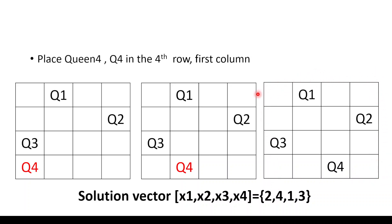This is one solution to the 4 queens problem — you can check for other solutions. The solution vector is (x1, x2, x3, x4) = (2, 4, 1, 3).